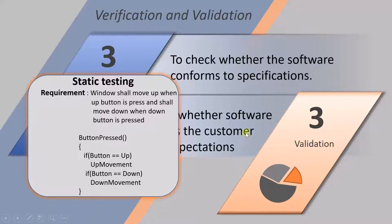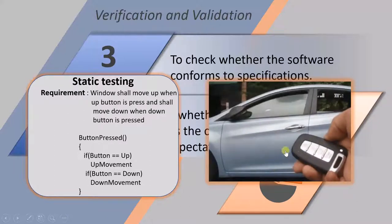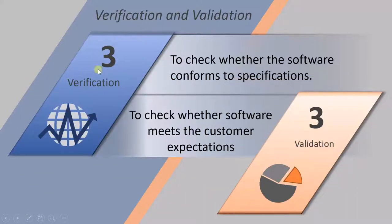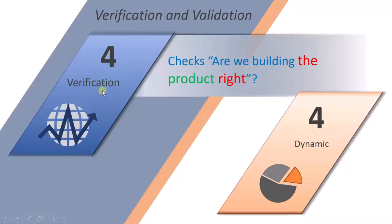Validation is to check whether the software meets the customer's expectation. We don't care whether it is meeting the specification; what we care about is whether it meets the customer's expectation. In dynamic testing, when the customer presses the down button the window should move down, and when they press the up button the window should move up — that is what we are checking in validation.